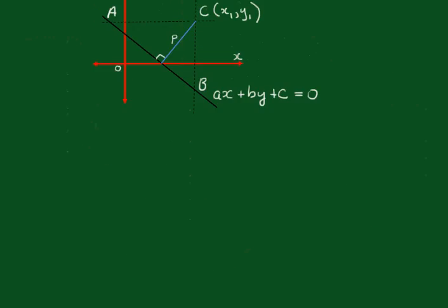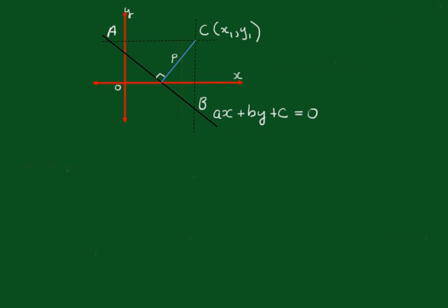Alright, now what we're going to do now is we're going to look at the area in a different way. I'll just write down what we had before. So the area was half of ax1 plus by1 plus c all squared over ab.